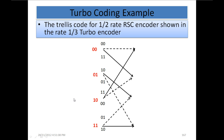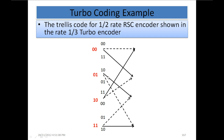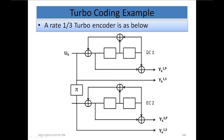YK1s produced here are the information bits, and YK1p and YK2p are the parity bits. These two parity bits are different from each other just because of this interleaver — pi is the symbol for the interleaver. It is called a 1/3 turbo encoder because we transmit one series of information bits and then the parity bits produced by each encoder, giving a rate of 1/3.